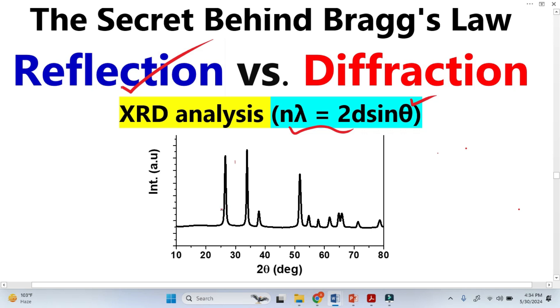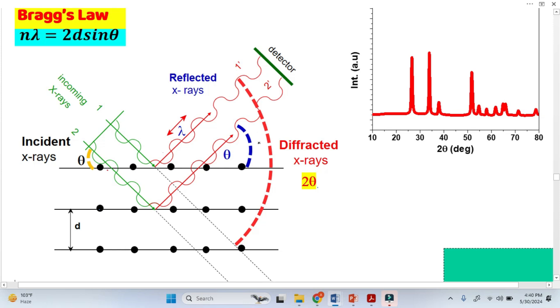If we look into the XRD pattern, on the X axis, the peak positions are represented by two-theta. This two-theta is called diffraction angle, not reflection angle, not scattering angle. Sometimes scattering is also confused with diffraction. Let's discuss in detail.